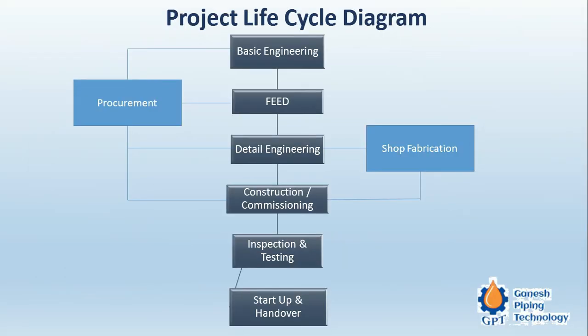Now we will focus on the project life cycle diagram. The first stage is basic engineering. During basic engineering, conceptual ideas are developed — for example, if we want to set up a gasoline plant, basic engineering covers the basic process, input and output quantities, process calculations, plant capacity, and how many trains there will be. All this information is identified during the basic engineering stage.